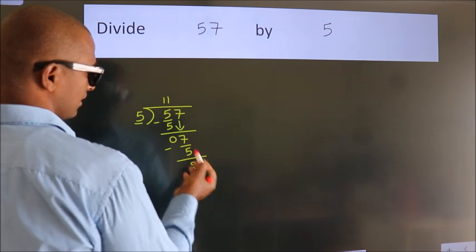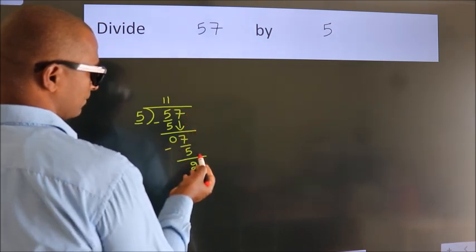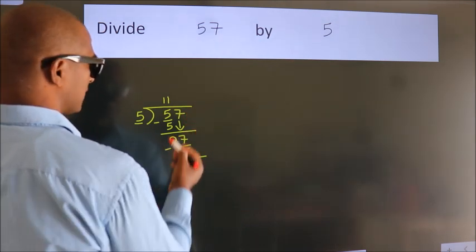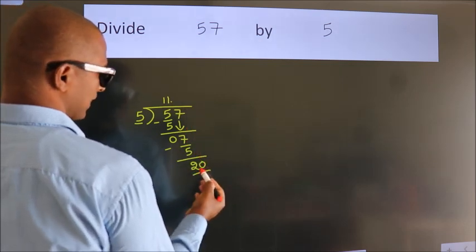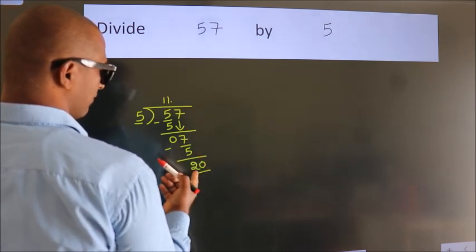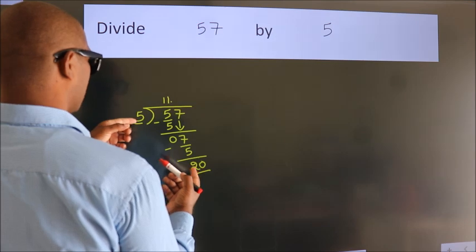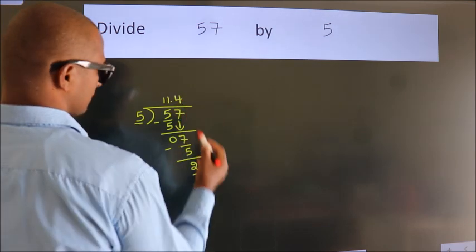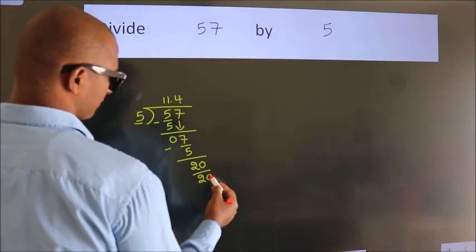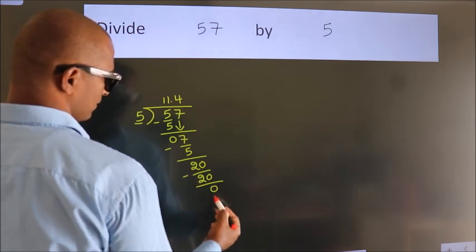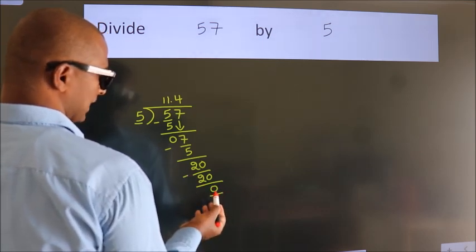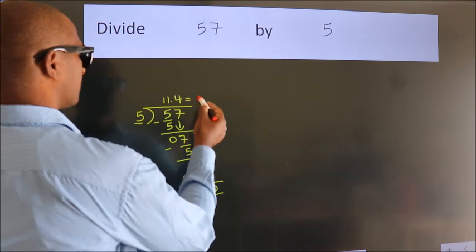After this, no more numbers to bring down. So what we do is, we put a dot and take 0. So 20. When do we get 20? In the 5 table. 5 four times is 20. Now we subtract. We get 0. We got remainder 0. So this is our quotient.